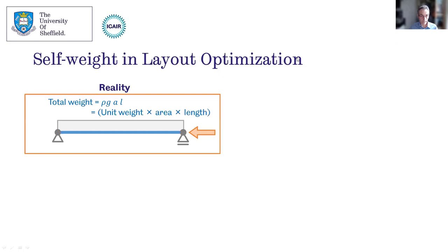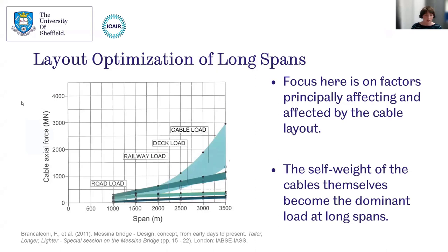Thank you, Matthew. As Matthew said, today I'm going to be talking about layout optimization. This graph already shown by Ian really highlights the importance of self-weight when looking at long spans. The Messina Bridge with its span of around three kilometers would already have the cable's own self-weight as the dominant cause of force in the cable. So it's clearly important that we can accurately model this for the purposes of our optimization algorithms.